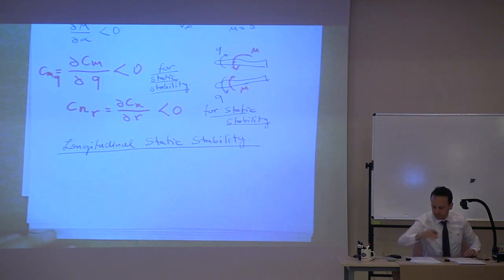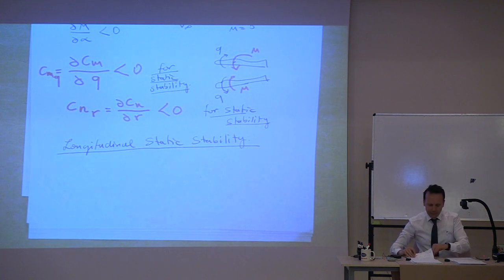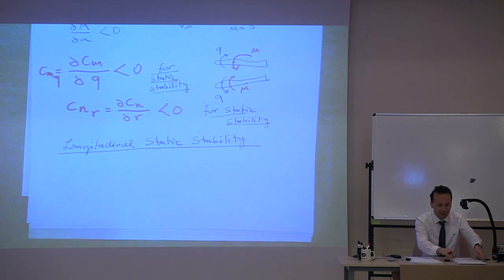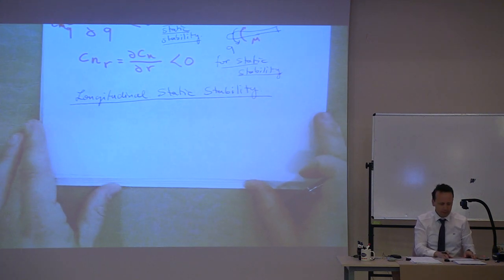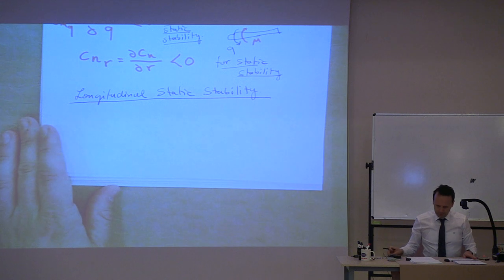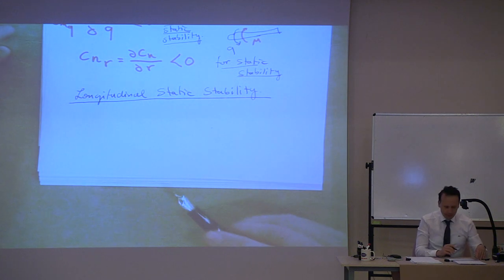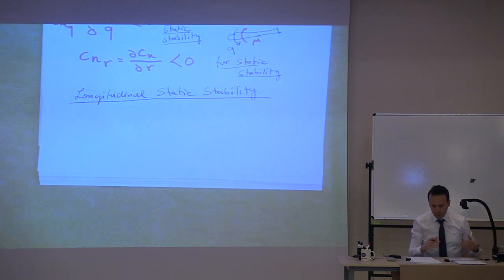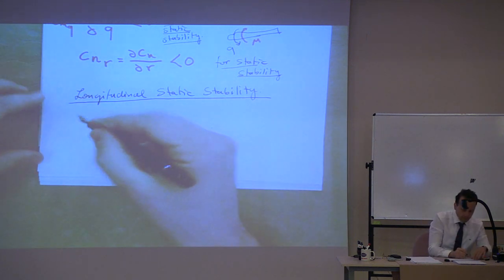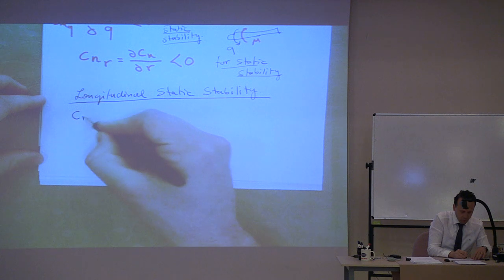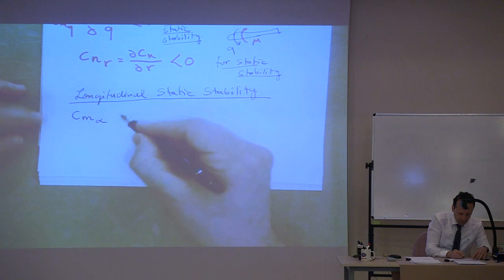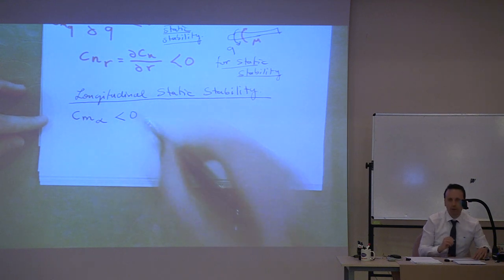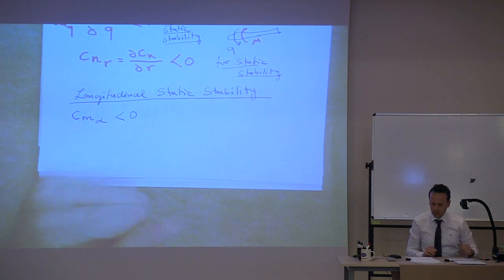We are finally at longitudinal static stability. We are now not looking at dynamic stability anymore — we are looking at static stability. The most important partial derivative, as I mentioned, is CM_alpha, and we said CM_alpha must be less than zero. We established that in the previous hour.